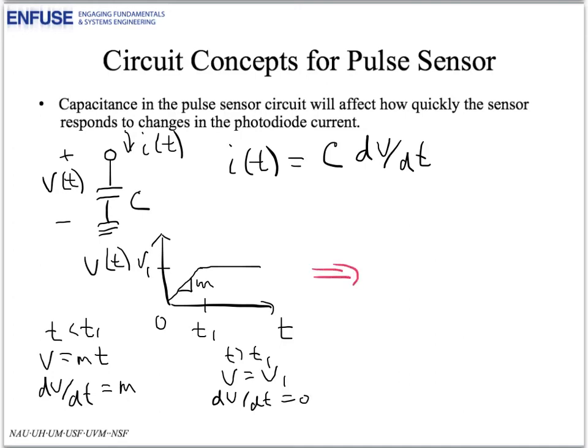Now if we look to see what the resulting current across the capacitor is, up to time T equals T1, the time derivative of the voltage again was M, so the current is going to be C times M. And after that, it drops to zero because the time derivative is zero.